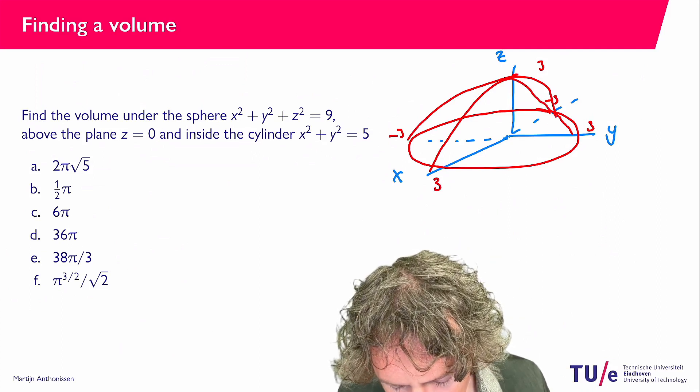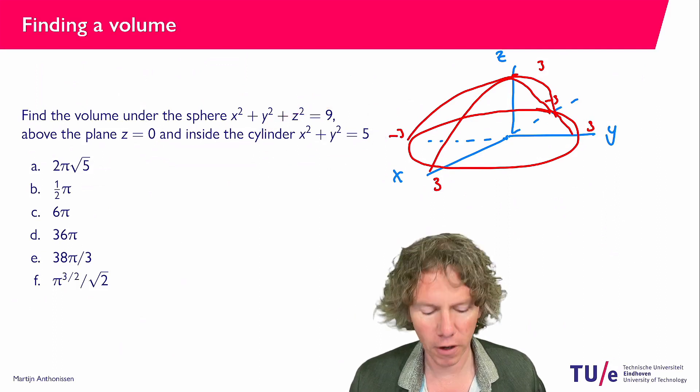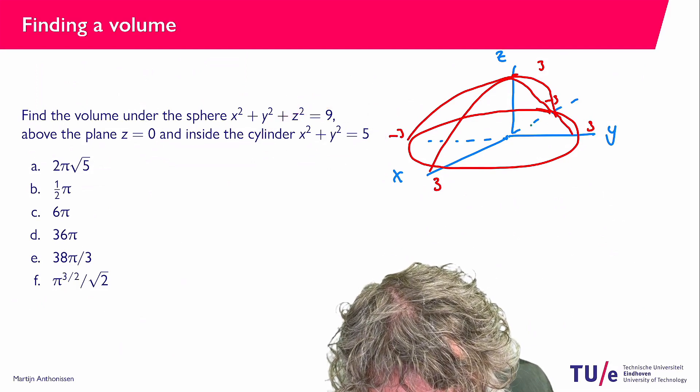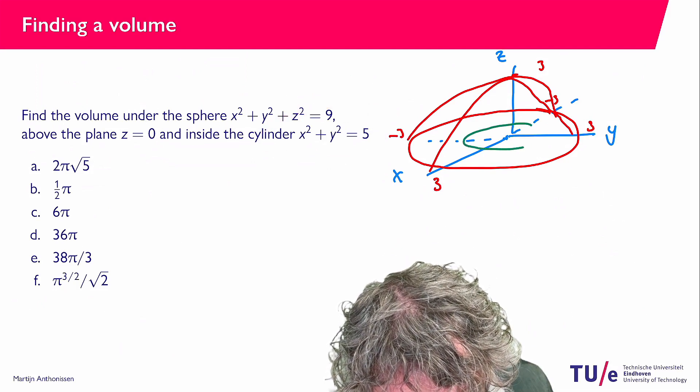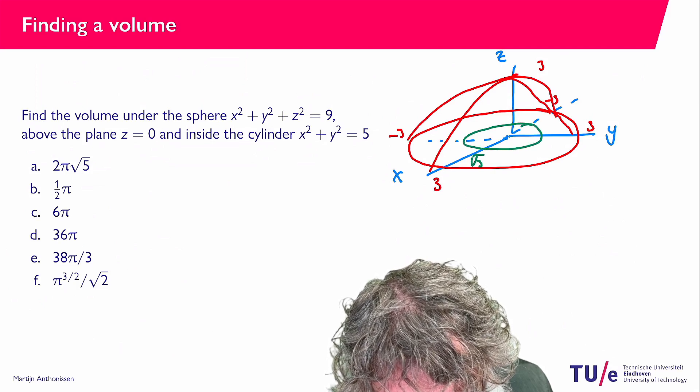And then here inside the cylinder x squared plus y squared equals 5. So if I plot that in a different color that is like a smaller circle here that has radius square root of 5, square root of 5.